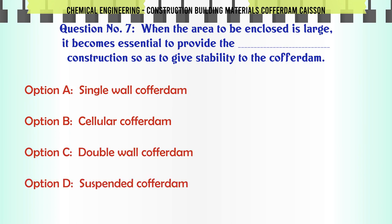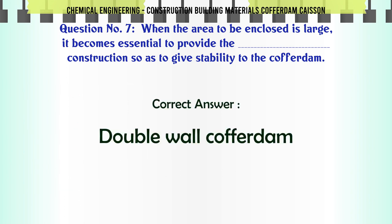When the area to be enclosed is large, it becomes essential to provide which construction so as to give stability to the cofferdam? A. Single wall cofferdam. B. Cellular cofferdam. C. Double wall cofferdam. D. Suspended cofferdam. The correct answer is: Double wall cofferdam.